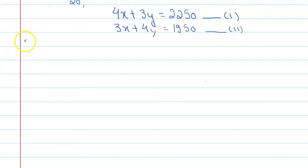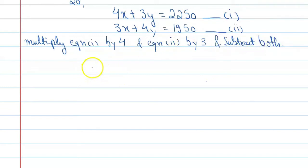We will multiply the first equation by 4 and the second equation by 3, then subtract both. So when we multiply the first equation, it is 4x plus 3y equals 2250. This is your first equation, and we will multiply it by 4. The second equation is 3x plus 4y equals 1950, and we will multiply this equation by 3.